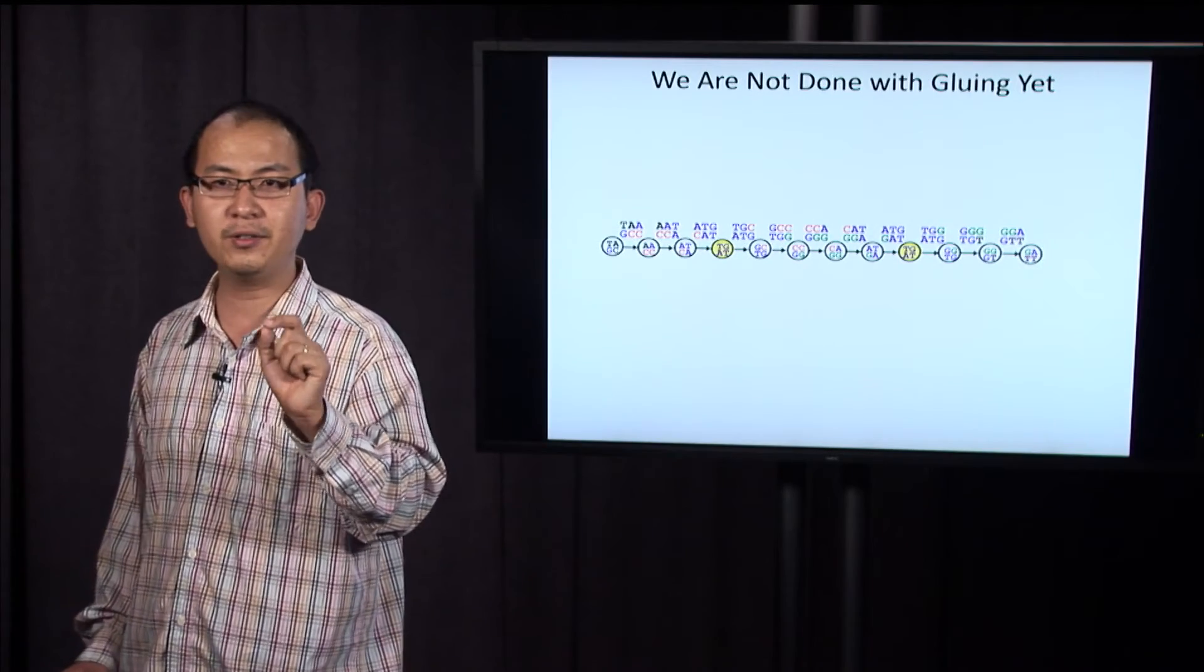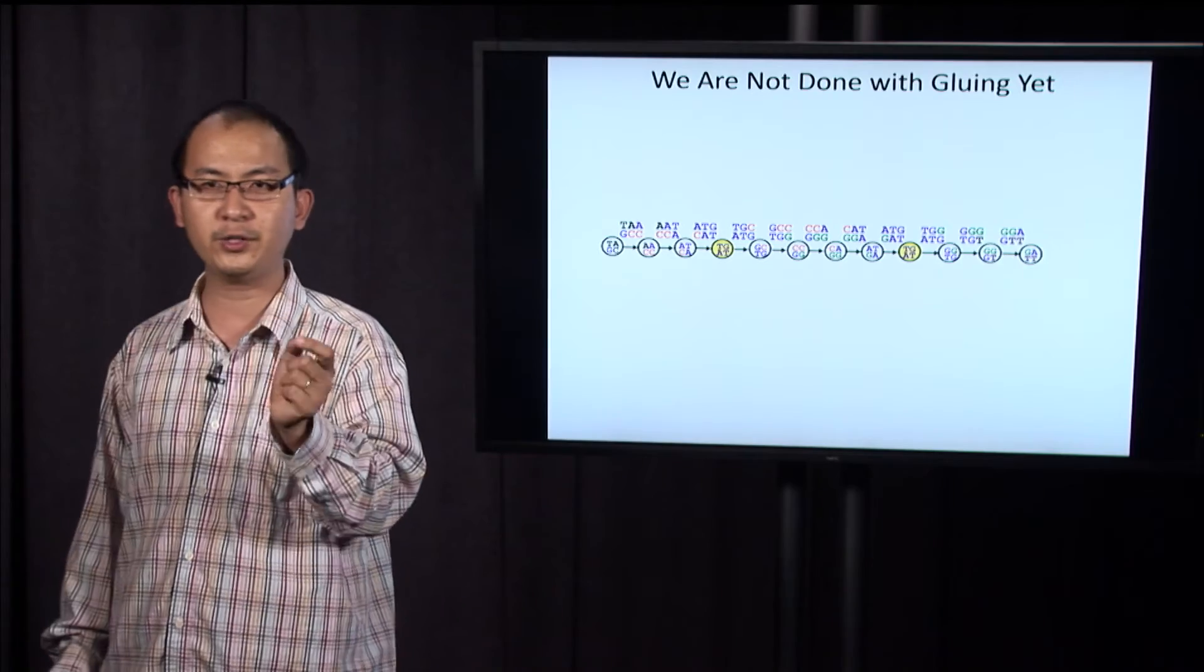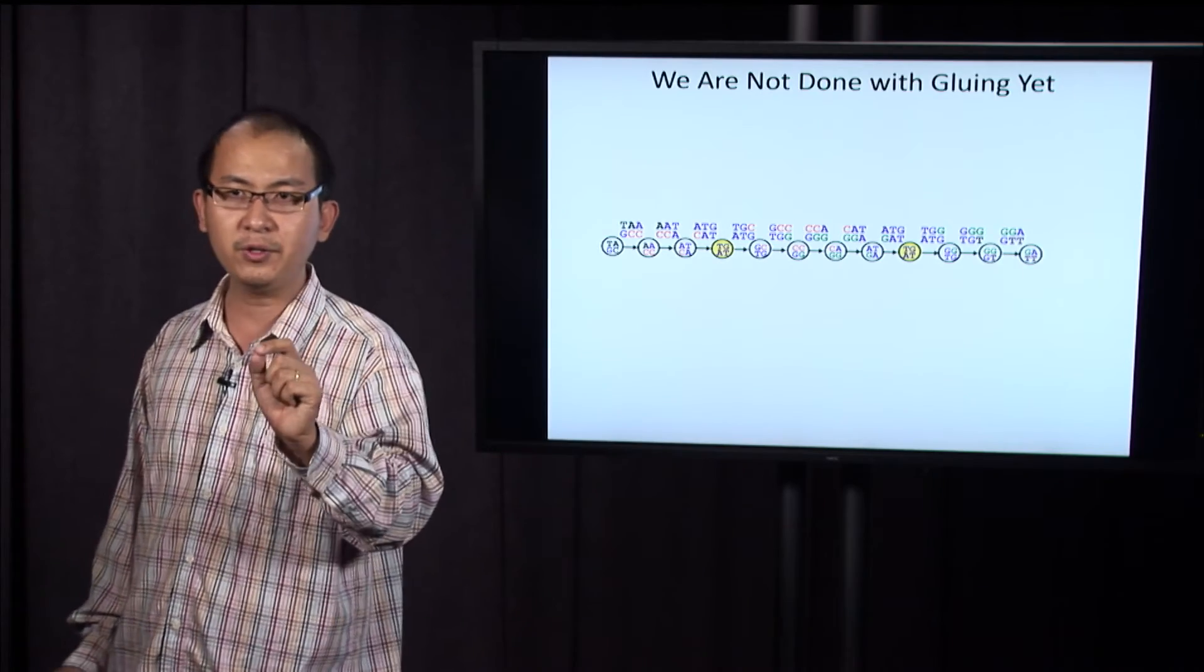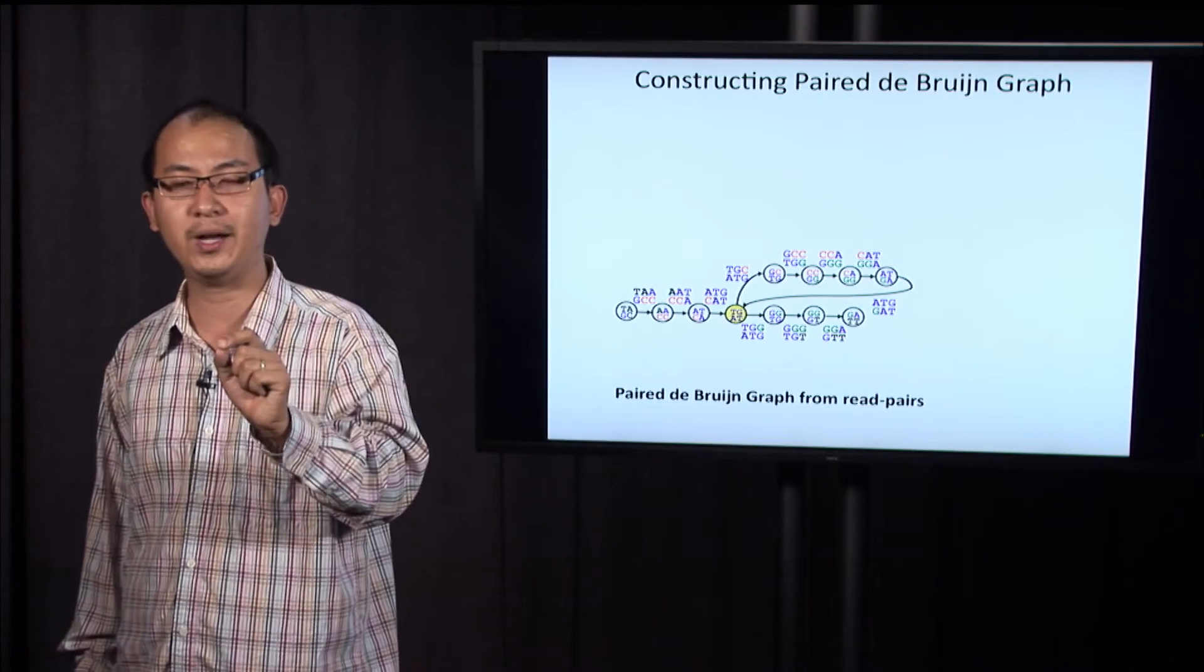But it's not all. We have something more to glue, TGAT, TGAT, there are two nodes with identical label. We have to glue them. We glue, this is the paired de Bruijn graph from the read pairs.